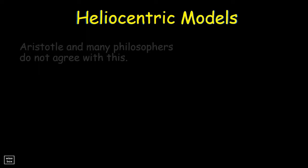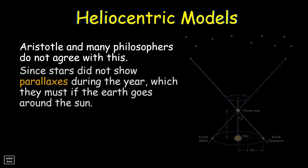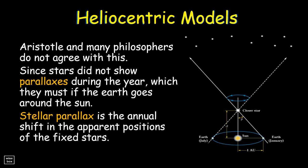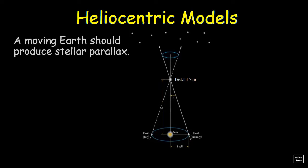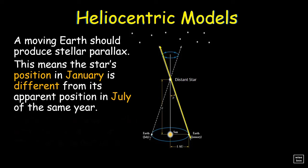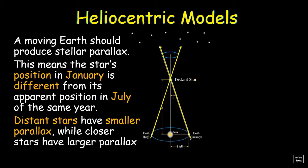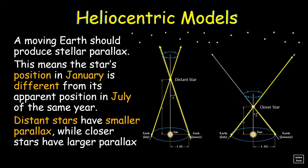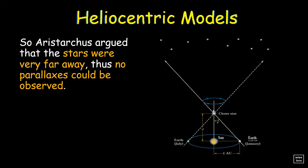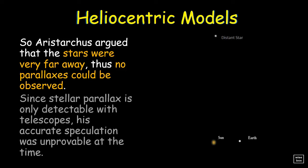Aristotle and many philosophers do not agree with this, since stars did not show parallaxes during the year, which they must if the Earth goes around the Sun. Stellar parallax is the annual shift in the apparent positions of the fixed stars. A moving Earth should produce stellar parallax. This means the star's position in January is different from its apparent position in July of the same year. Also, distant stars will have smaller parallax, while closer stars have larger parallax. So he argued that the stars were very far away, thus no parallaxes could be observed. And since stellar parallax is only detectable with telescopes, his accurate speculation was unprovable at the time.